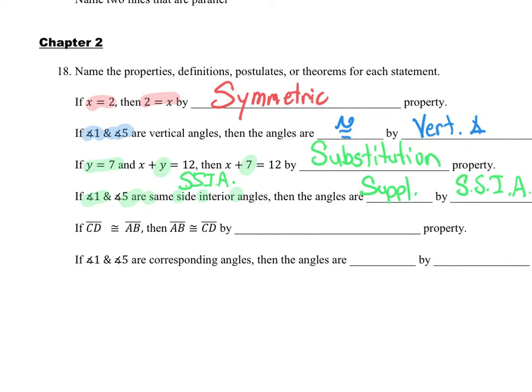If segment CD is congruent to segment AB, then segment AB is congruent to segment CD — well, this is the symmetric property again. I don't know why they have this in here twice.